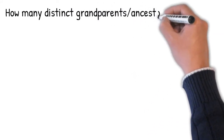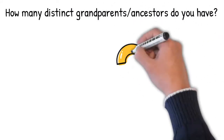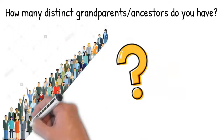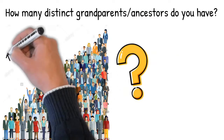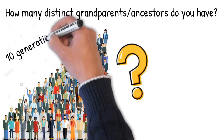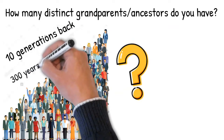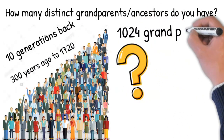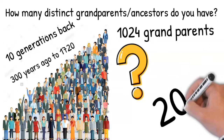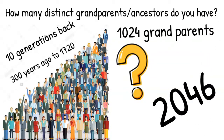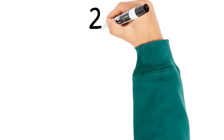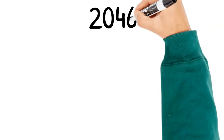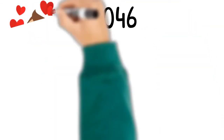Coming to the point — how many distinct grandparents or ancestors do we have? The answer depends on how many generations we want to go. Even if we go up to ten generations deep, that's 300 years ago, any one of us would have 1,024 ninth-generation grandparents. But if we combine all the grandparents together, it would be 2,047 ancestors in total — that's the number of persons who have contributed to our being here today.